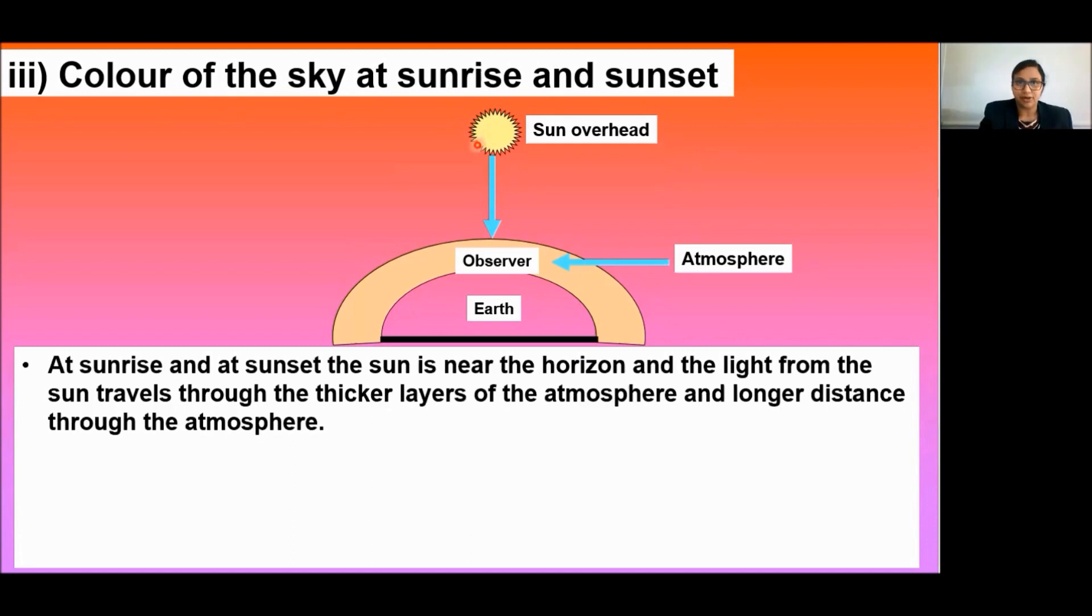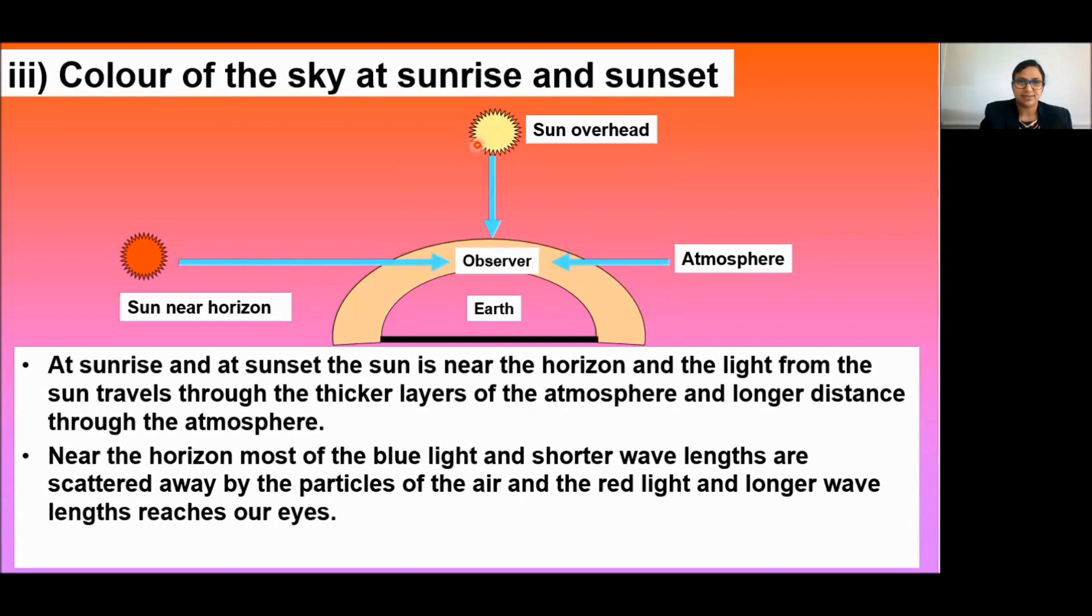Near the horizon, most of the blue light and shorter wavelengths are scattered by the particles. Therefore, the light travels through the thicker layers of the atmosphere and longer distance through the atmosphere. That means all the blue lights are scattered away. Therefore, the sun appears reddish in color.